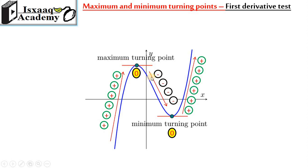The slope is negative then positive — this is the minimum point. The other case is the point of inflection. Positive to negative means maximum; negative to positive means minimum.